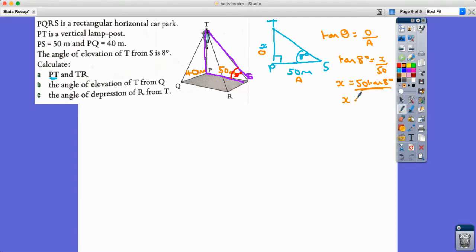So TP, or our X value, is 50 tan 8 degrees, which is exact. If we round it to three significant figures, we get 7.02 meters.